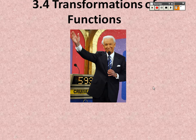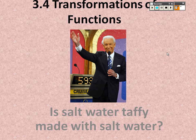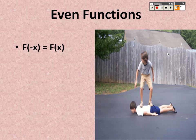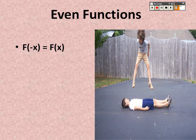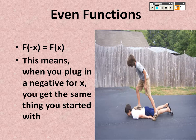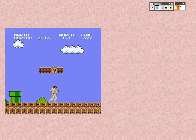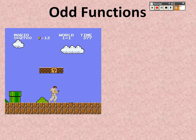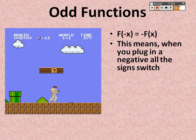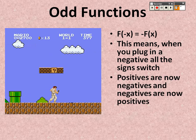We are on 3.4, transformations of functions. Even functions: if you plug in a negative value and you still get what you started with, the function is even. An odd function is when you plug in a negative and you get a negative answer — positives become negatives and negatives become positives, basically opposites.